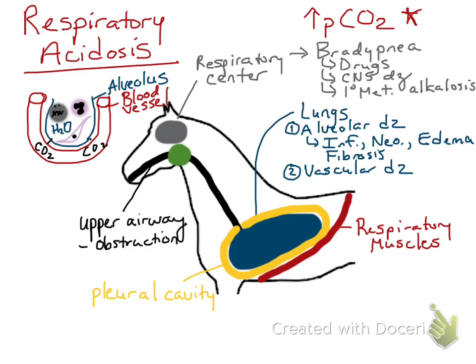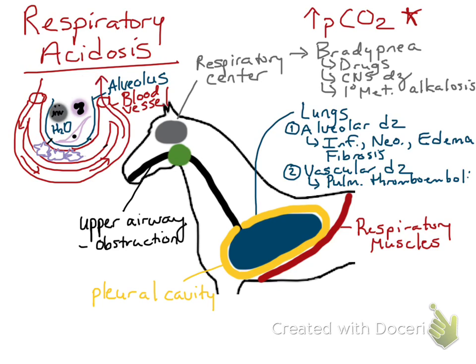For vascular disease, that can be two separate things. First, there could be a thrombus within the blood vessels inhibiting blood flow to the alveolus, so there's decreased gas exchange. I've drawn some plaque within this blood vessel to represent pulmonary thromboembolism. The second cause for vascular disease could be a right-to-left shunt, where blood bypasses the alveolus and venous blood goes straight to arterial blood without being oxygenated by a functioning alveolus.